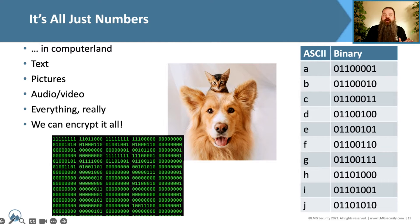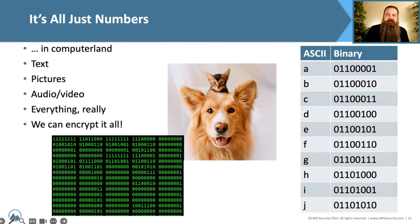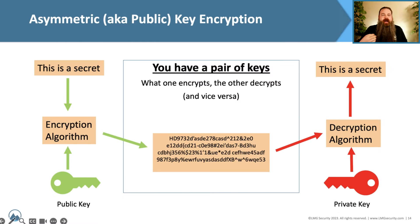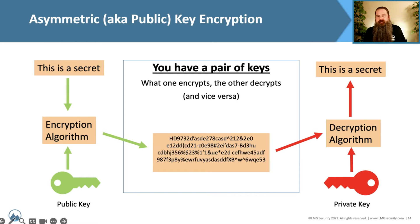So if we can go through and encrypt that data into a more secure format, we can then send it as a secure image and not everyone is going to be able to see it. The type of encryption we want to talk about here is asymmetric encryption, also known as public key encryption.